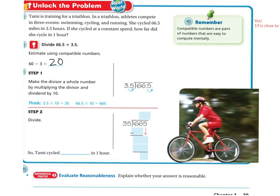This is the important part. Whenever you have a decimal outside the division bracket, you have to move it to the very end to make it a whole number. So however many spaces you move it on the outside, you also have to move it on the inside. On this one, I'm going to move it over one space to make it a whole number, so I move the decimal one space on the inside too.